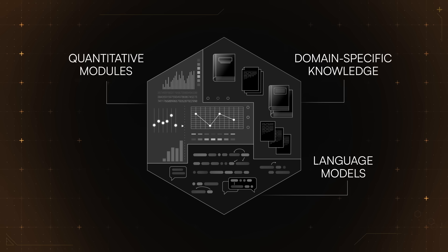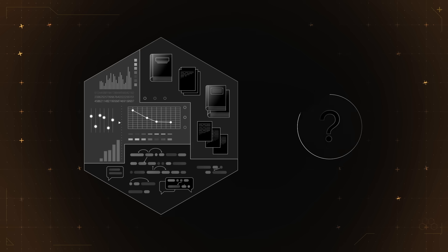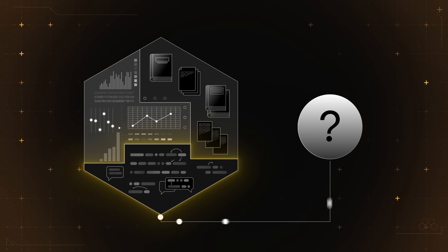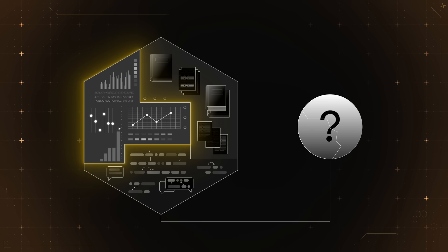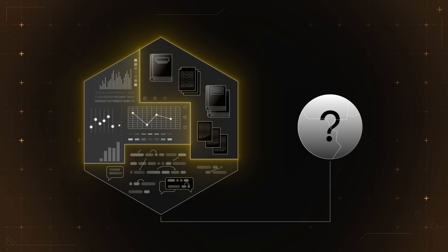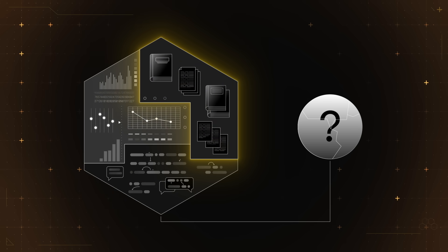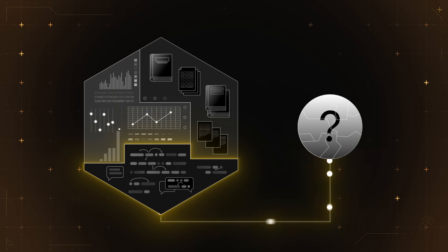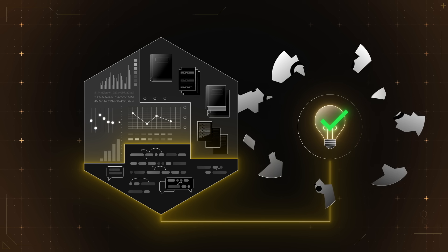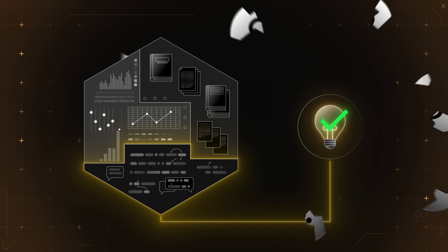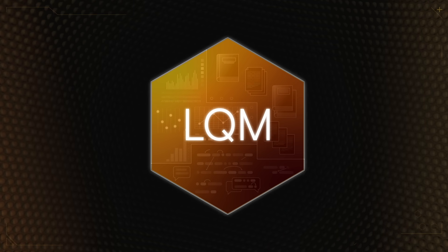So how do all these components work together? When presented with a problem, an LQM might first use its language model to understand the issue. It could then activate its quantitative modules to perform necessary calculations or simulations. Throughout this process, it may draw upon its domain-specific knowledge to inform its reasoning. Finally, it could synthesize all this information to generate a response, which is then communicated back through the language model and to the user.